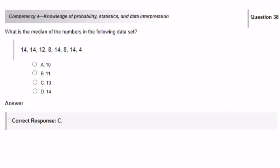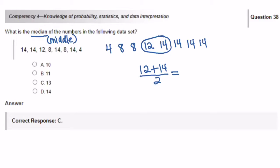What is the median of the numbers in the following data set? 14, 14, 12, 8, 14, 8, 14, and 4. So again, to find the median, we are looking for the number that is in the middle when we put our data in order from least to greatest. Because we have an even amount of data, we have to take the two middle numbers. And we have to add those quantities together and then divide by two. And that is going to give us our median. So we take the 12 plus the 14 to get 26 divided by 2, which is 13.